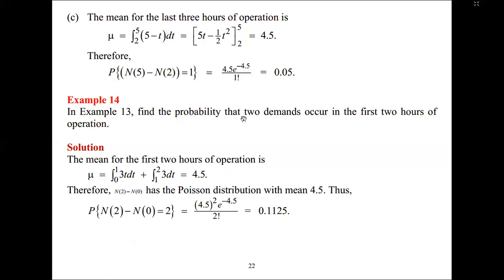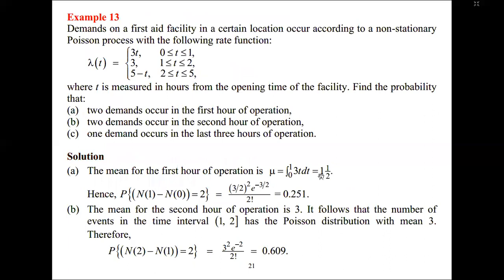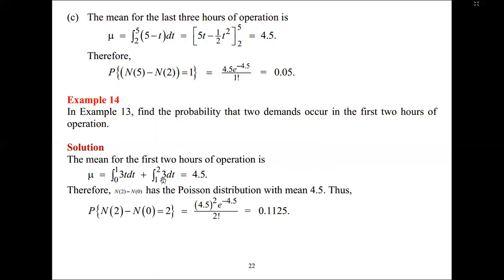From the previous calculation, integrating 3T gave 1.5, and the constant 3 over the second hour also gives 3, so 1.5 plus 3 equals 4.5. Therefore, the number of events in the interval zero to two follows a Poisson distribution with mean 4.5. The probability that two events occur in the first two hours is: 4.5 raised to the power two, times e raised to the power minus 4.5, over two factorial — which gives 0.1125.